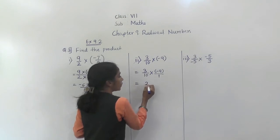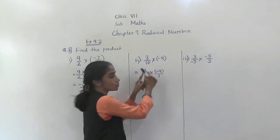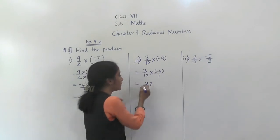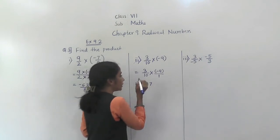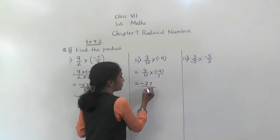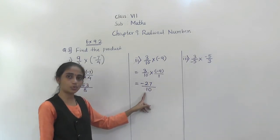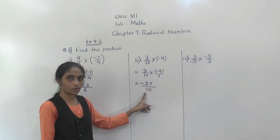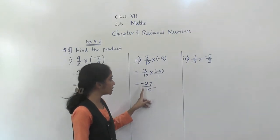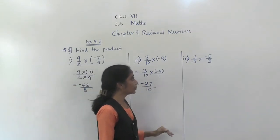3 nines are 27. 3 is positive, 9 is negative, so their product will be negative. 10 ones are 10. So what we got as an answer? Minus 27 upon 10.